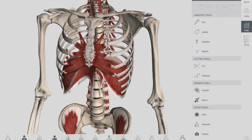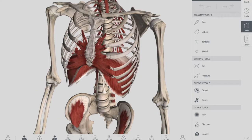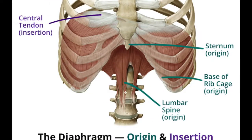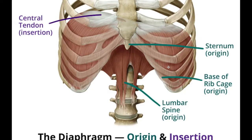We have three main origins. The picture explains them well. The first origin is the costal part, arising from the deep surface of the lower six ribs — you can count them: one, two, three, four, five, and six. So the costal part of the diaphragm arises from the deep surface of the lower six ribs and their costal cartilages.